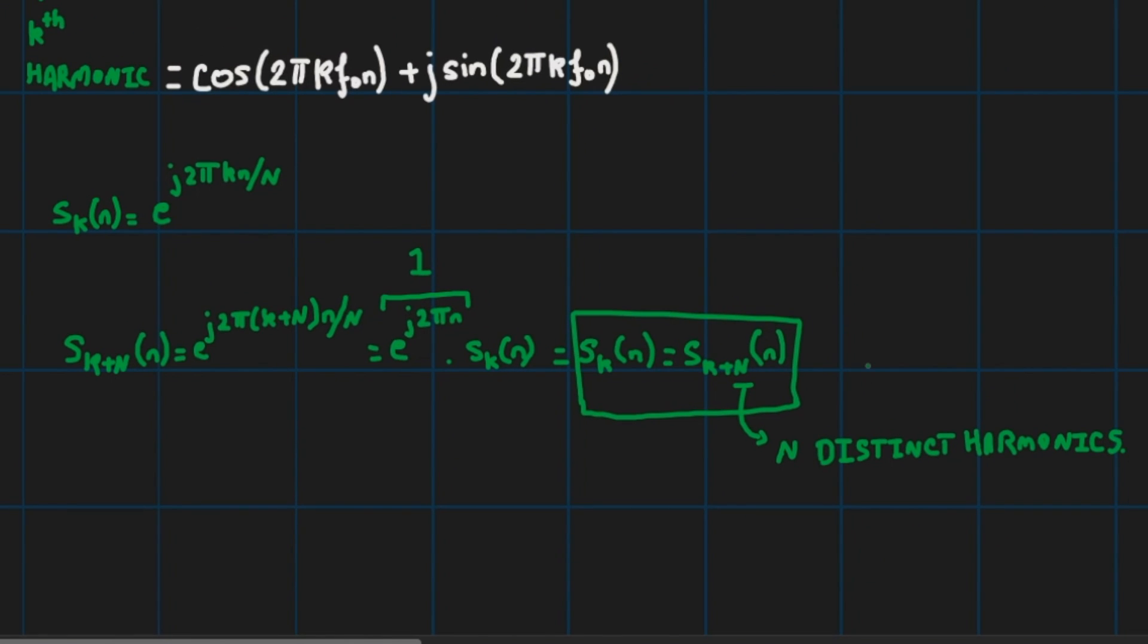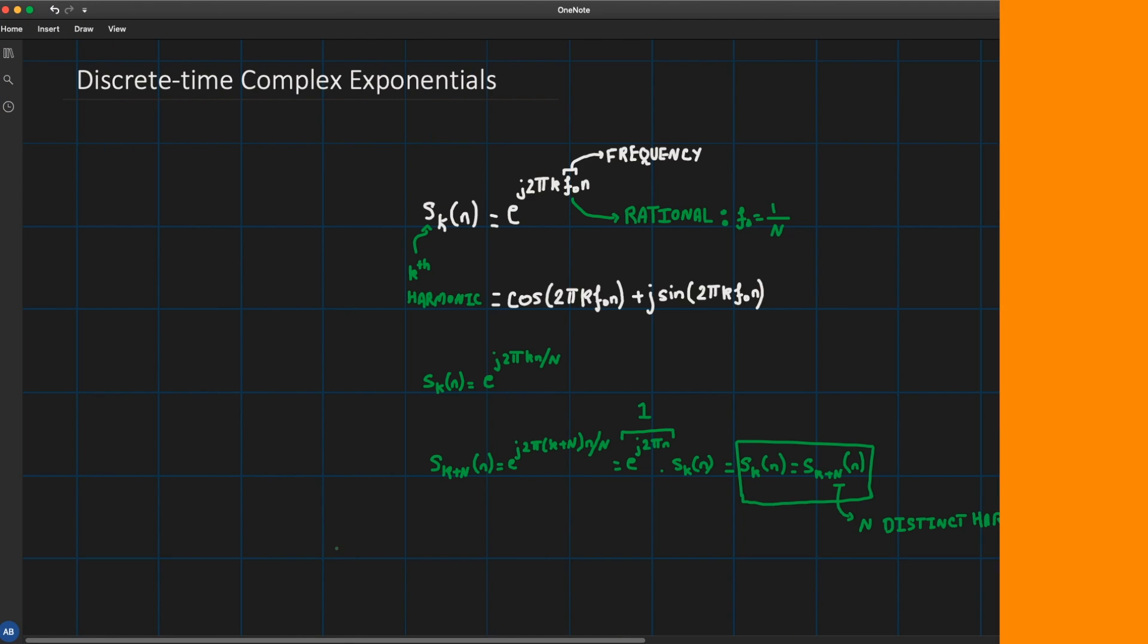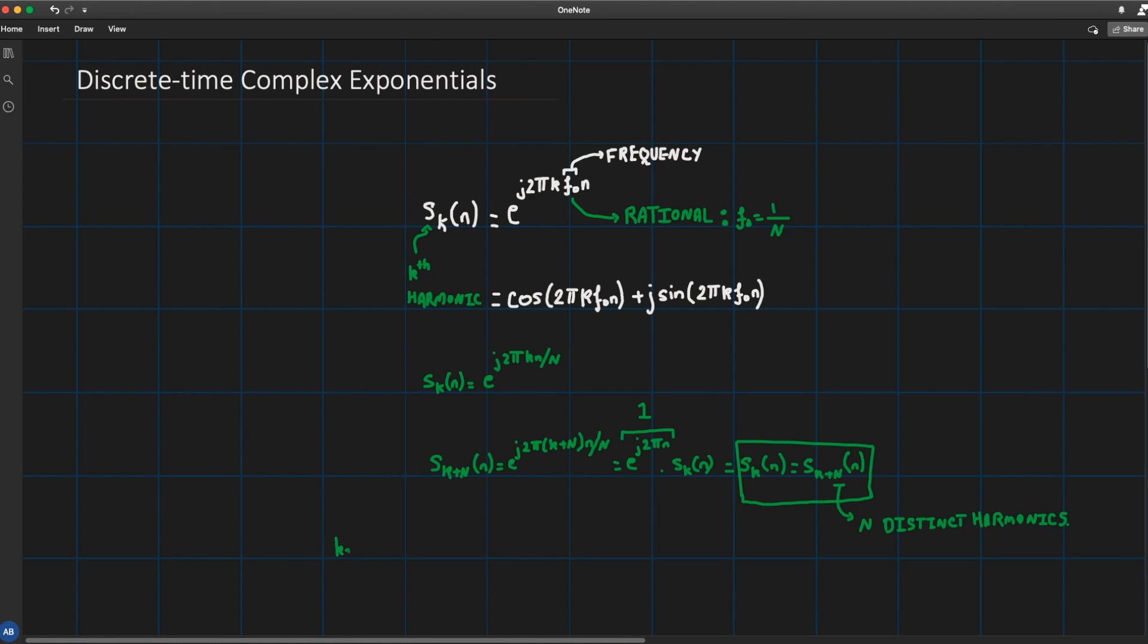Also all members of the set have a common period of N samples. Now clearly we can choose any consecutive N complex exponentials from, let's say, I can pick any k, let's say n₀, and I can go all the way to the same number plus N minus 1.